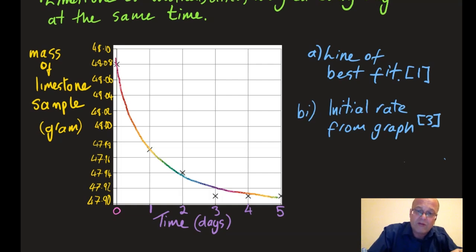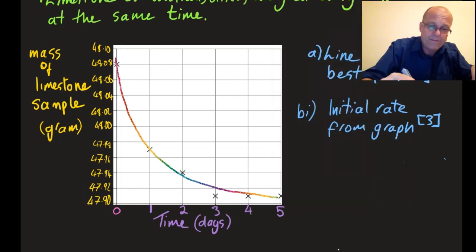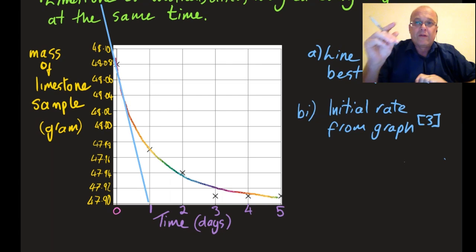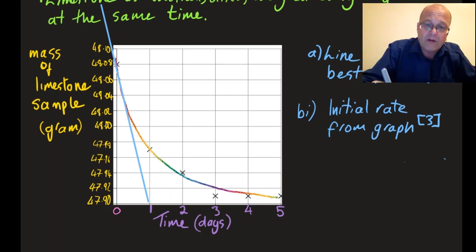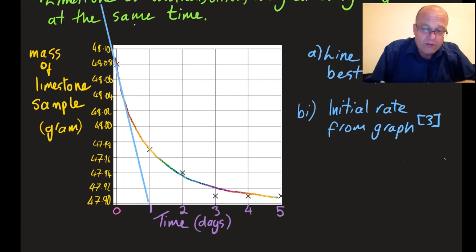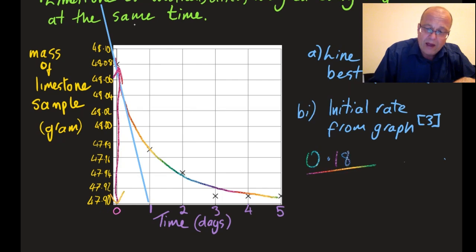That's one point. Now we have to work out the gradient. The gradient is rise over run, so the vertical part of this triangle here is going to be 0.18 and the horizontal, well that's just going to be one day. That's rather lucky. Over one, put the units in.